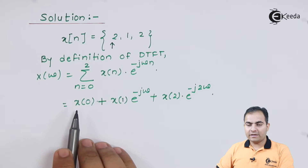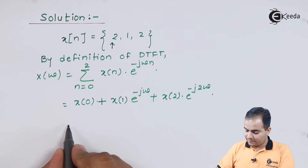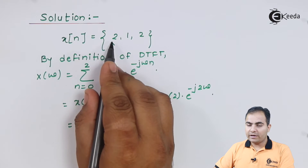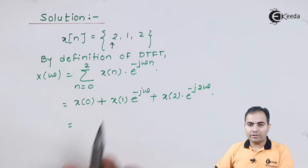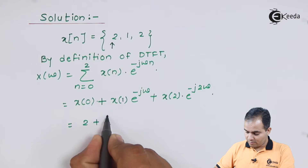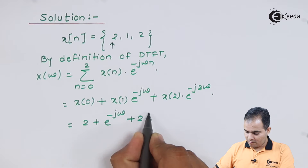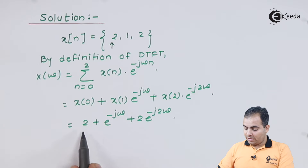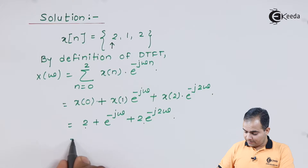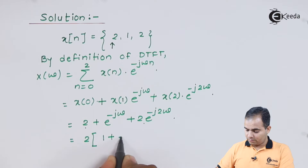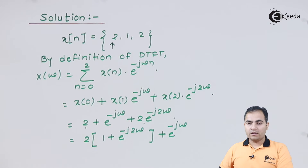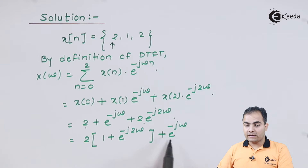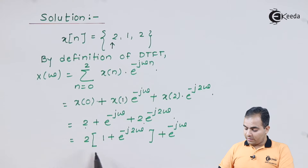Now I'll substitute all sample values: the origin value x[0] has amplitude 2, x[1] has amplitude 1, and x[2] has amplitude 2. I'll take 2 common from the first and third terms, giving 2 times the bracket (1 + e to the power minus j 2 omega) plus e to the power minus j omega.